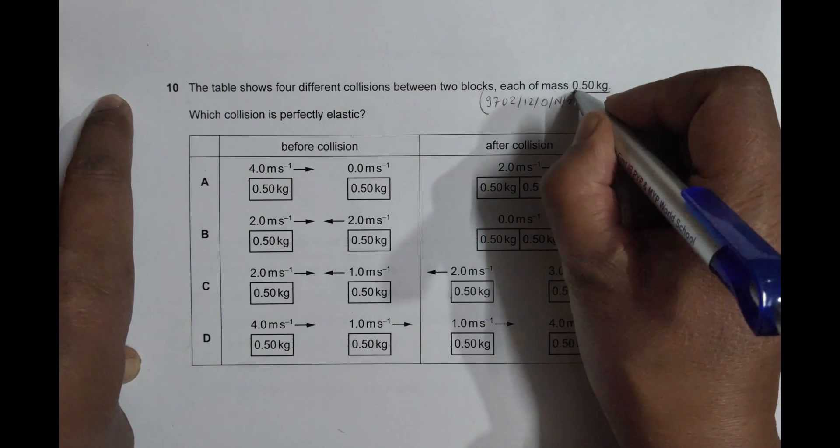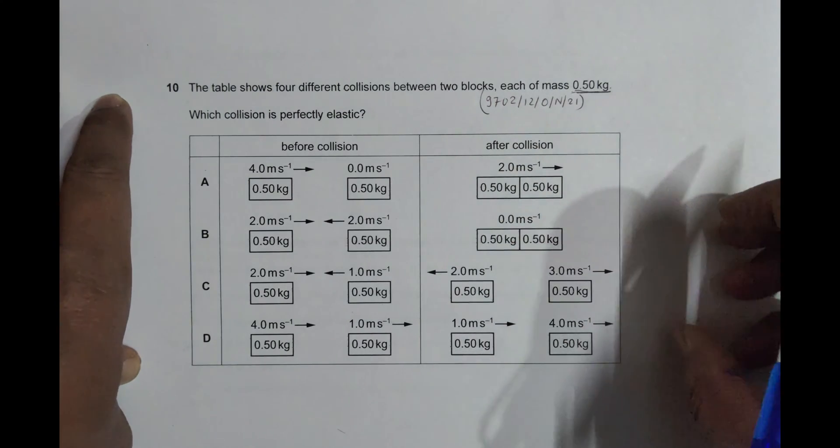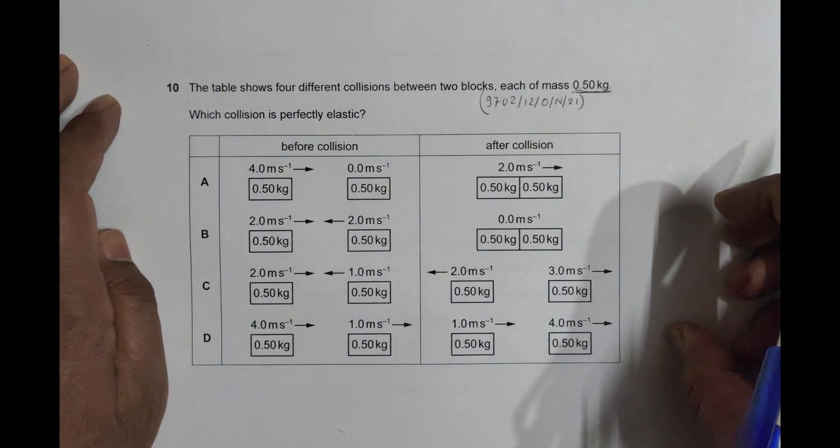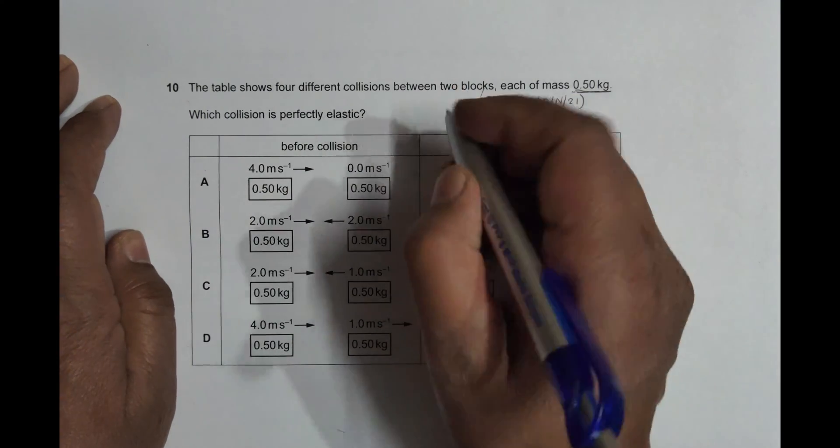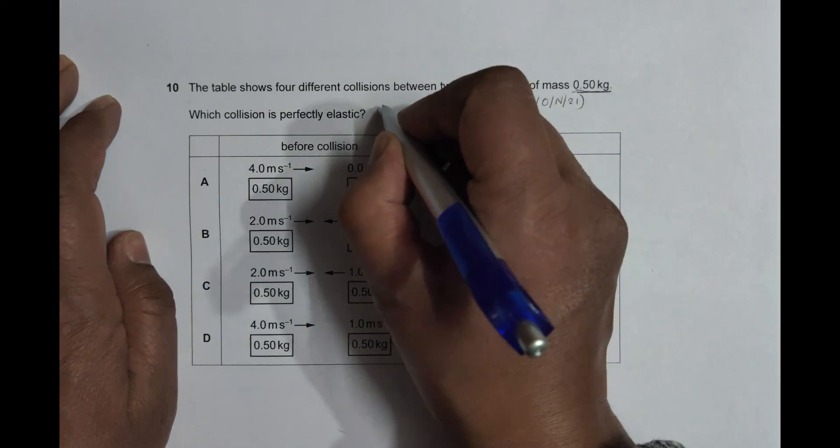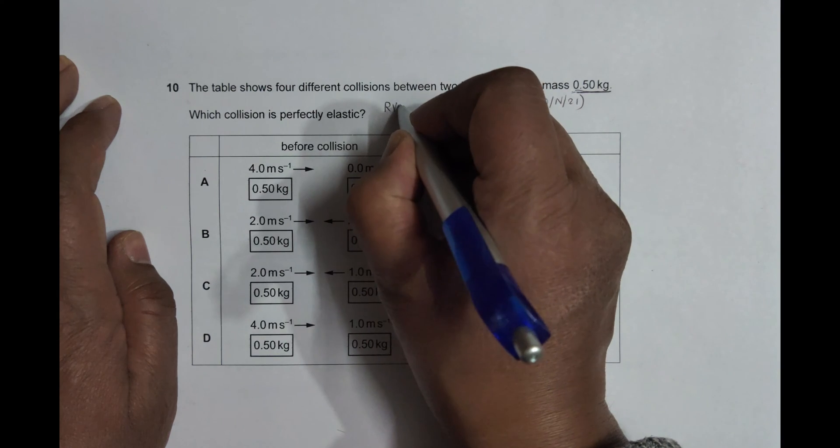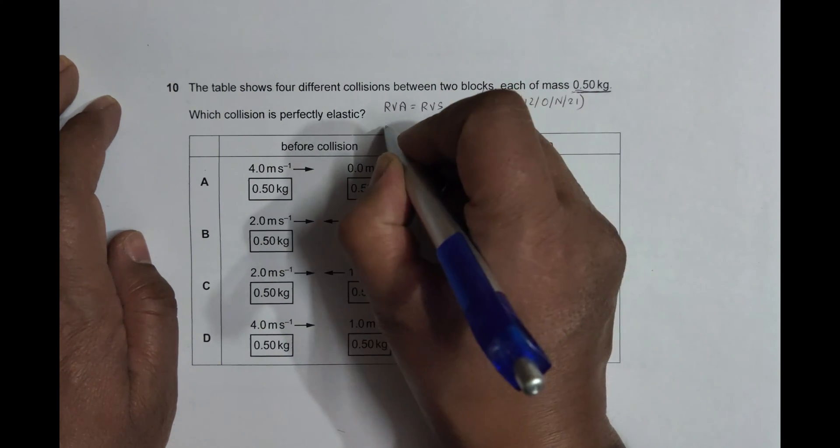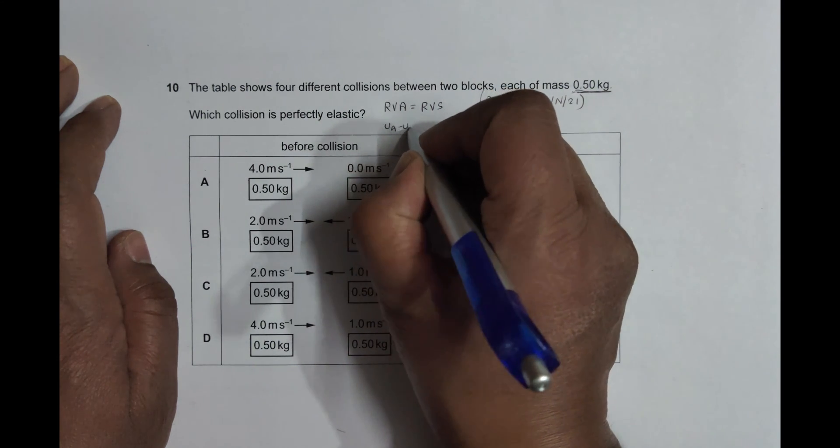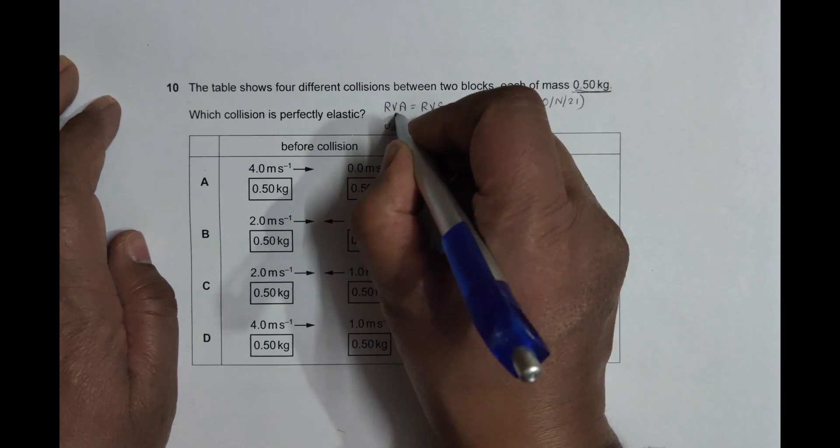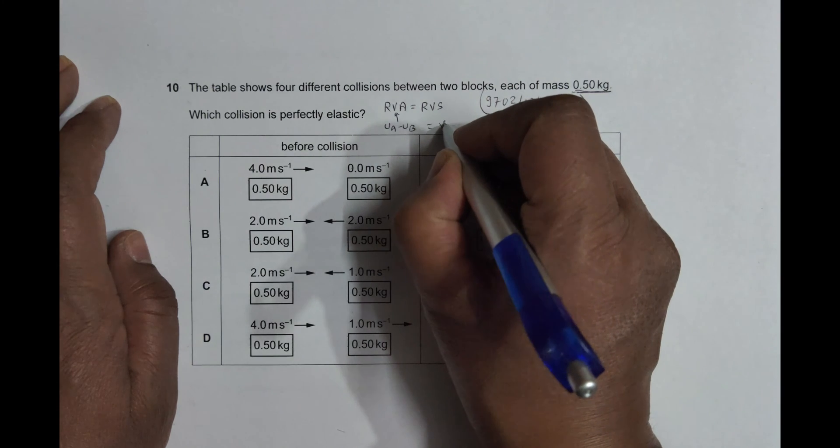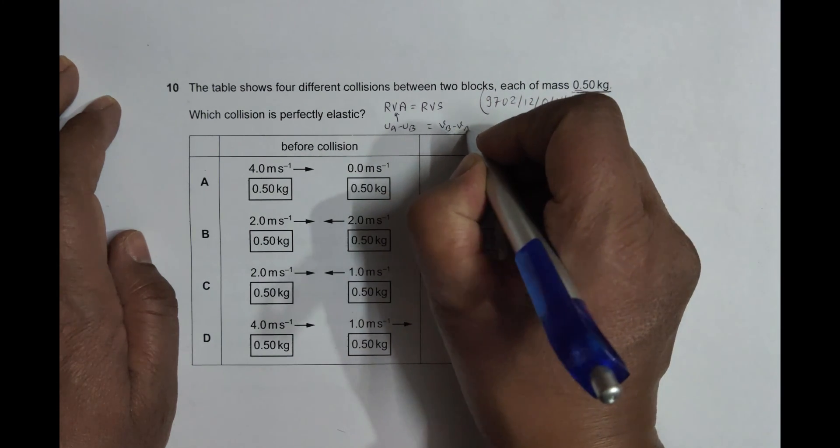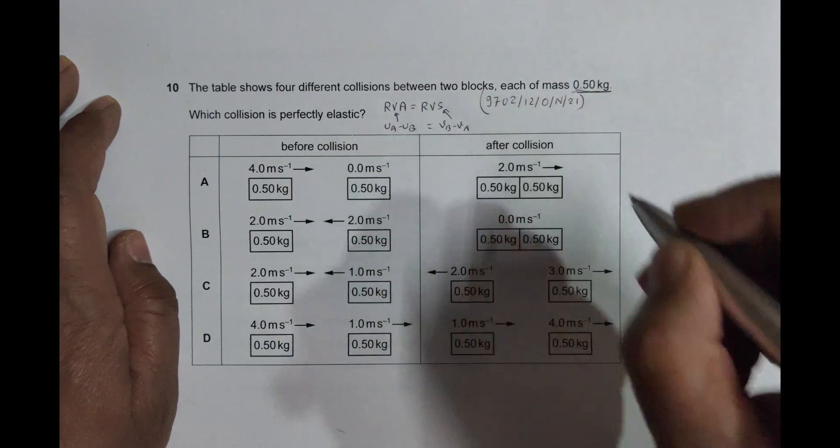One of the things that we have to take care during elastic collision is that the relative velocity of approach is equal to relative velocity of separation, which means u_a minus u_b should be equal to v_b minus v_a. They should be equal.